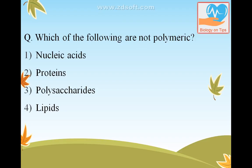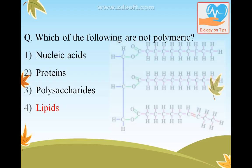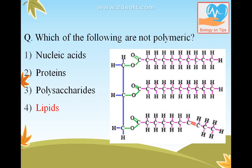Which of the following are not polymeric? Polymeric means they are not polymers. The answer is lipids. Lipids are not polymers — they are esters of fatty acids and glycerol. You can see in the diagram there is a glycerol molecule and three fatty acid chains.